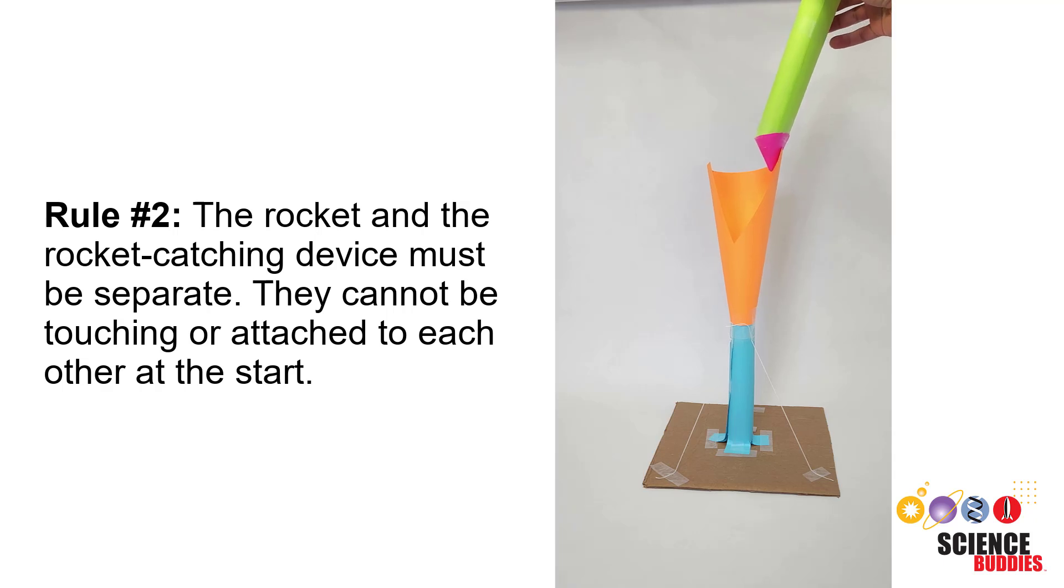Rule number two: The rocket and the rocket catching device must be separate. They cannot be touching or attached to each other at the start.